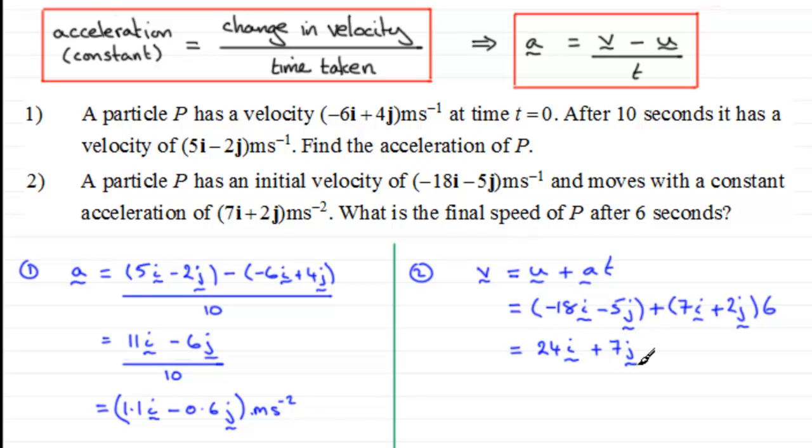So that is the magnitude of our velocity. And so to get that speed, all we need to do is find that magnitude, and we do that by Pythagoras's theorem. It's equal to the square root then of the sum of the squares of our two components, so that's 24² + 7², and that is 625. The square root of 625, which is 25, so the speed is 25 meters per second after those 6 seconds.